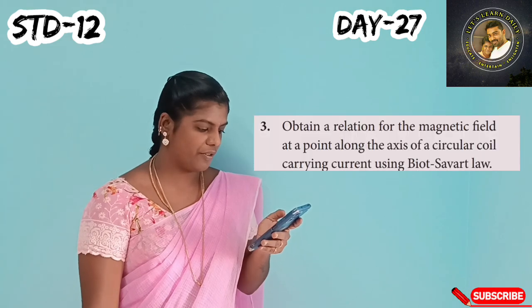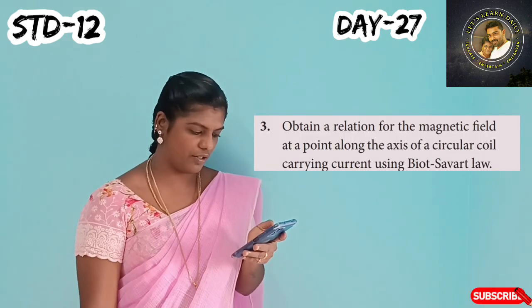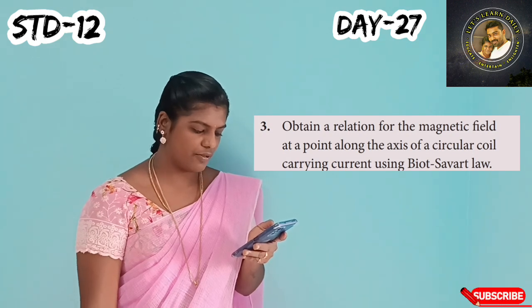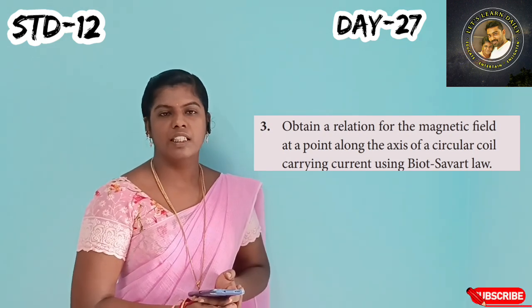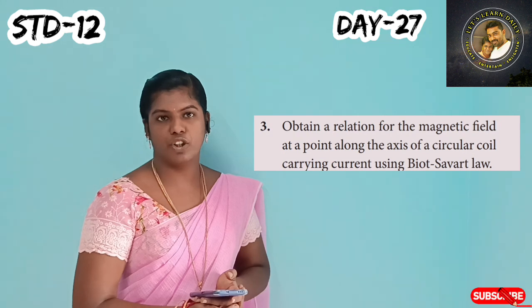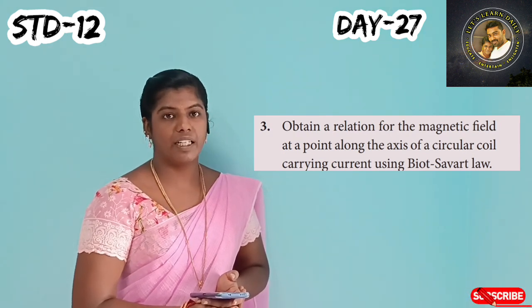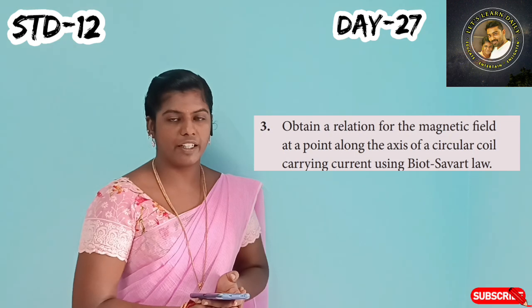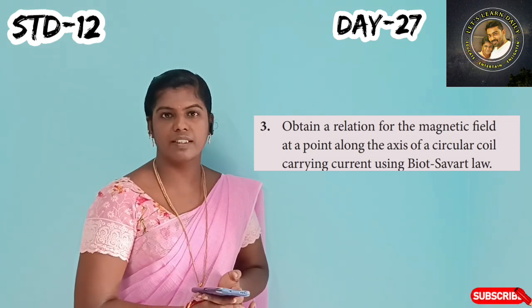We will start with 12th. We will talk about the magnetic field at a point along the axis of a circular coil carrying current, using Biot-Savart law. Biot-Savart law is used for circular shapes. In a circular shape there is a coil — current flows through it and creates a magnetic field.